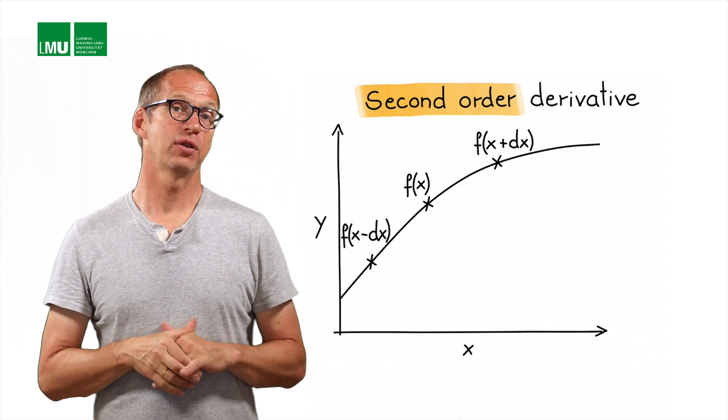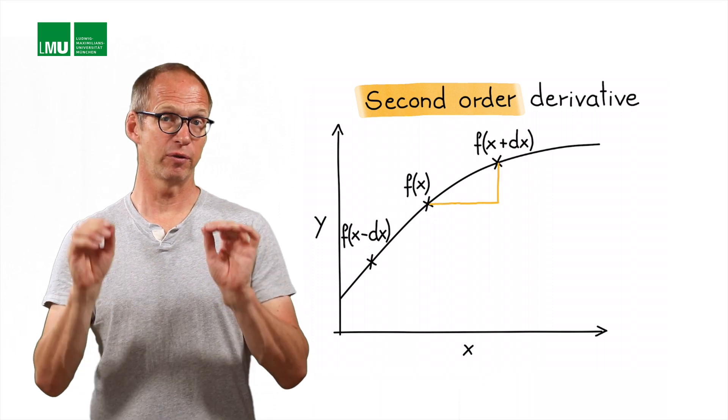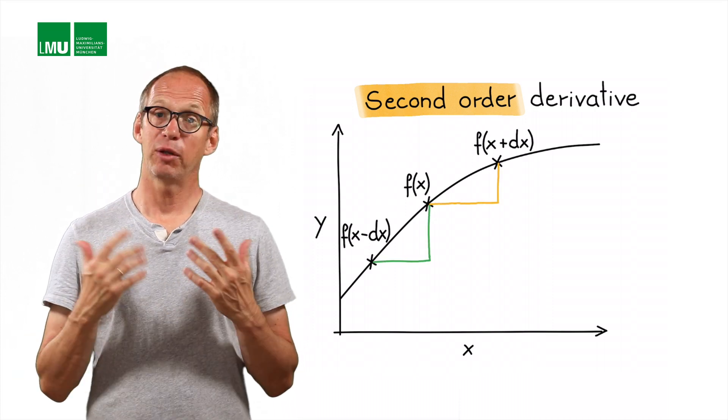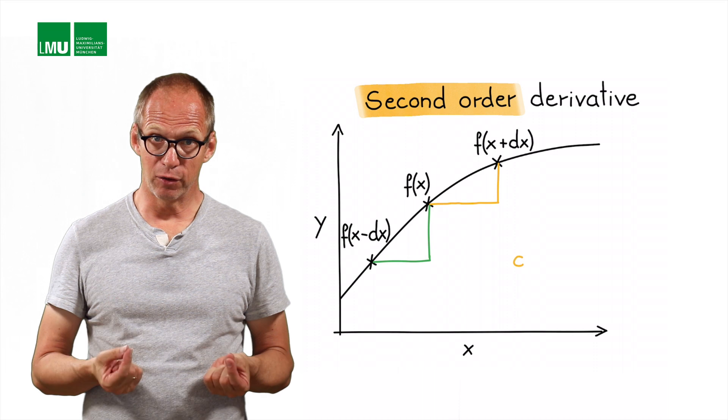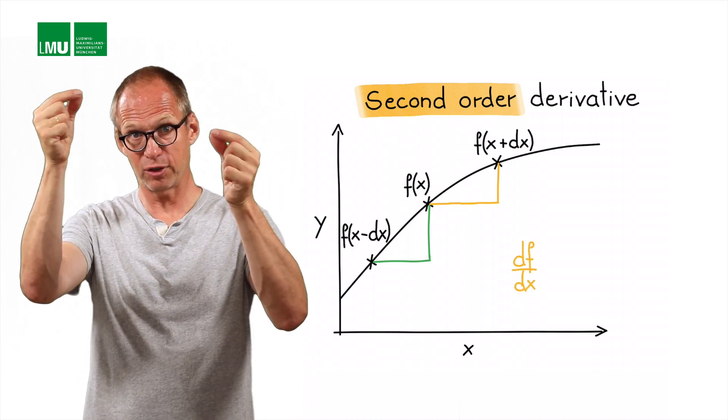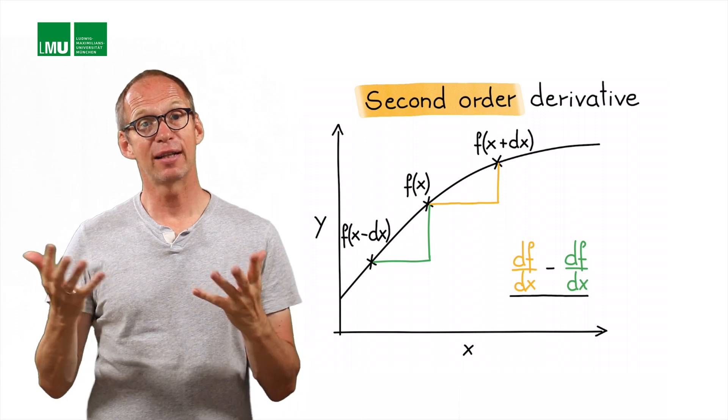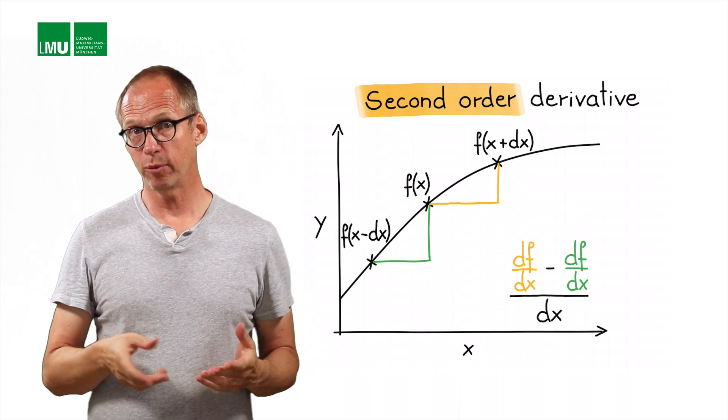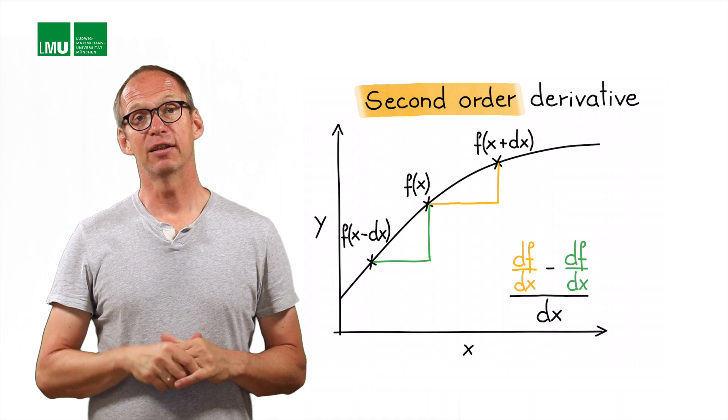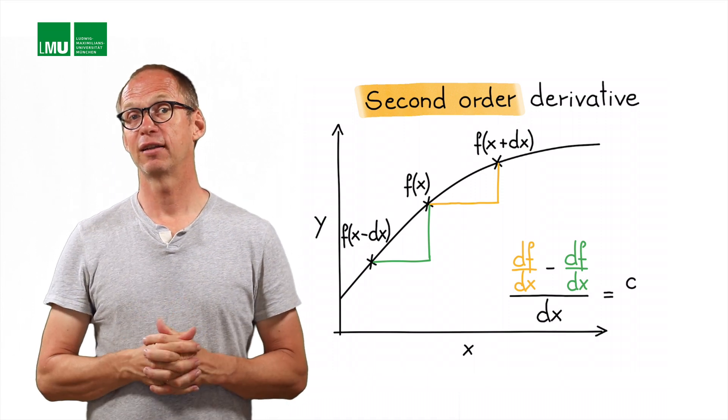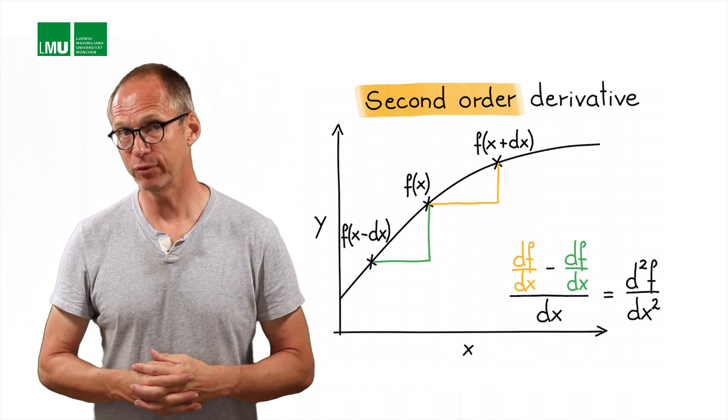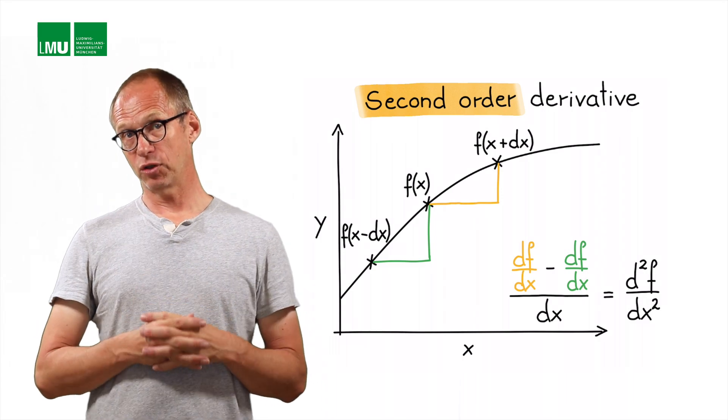If we already have calculated an approximation of the first derivative at those points, can we not simply take the derivative of those first derivatives, calculated at two different points, and divide again by the grid increment, or the grid distance between those two points—dx or 2dx—to obtain a second derivative? That's what we're going to do next.